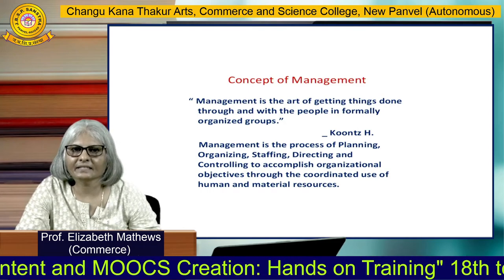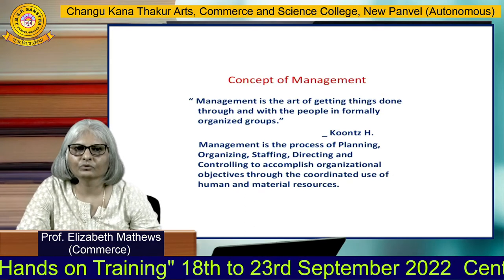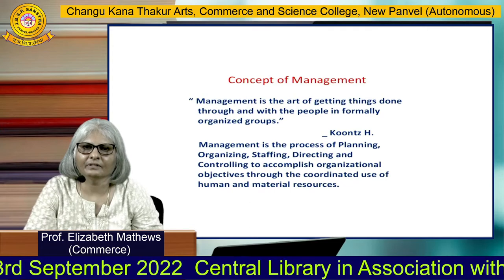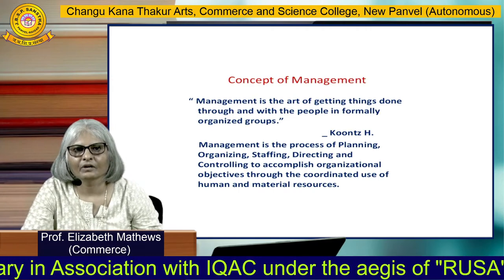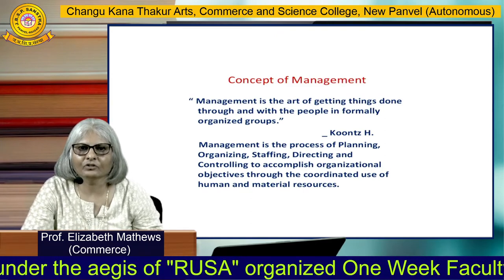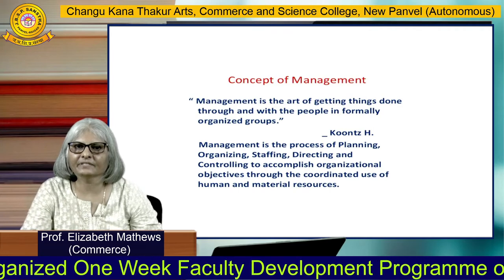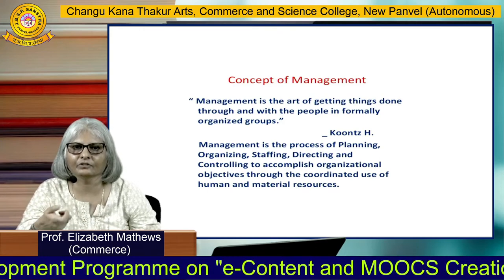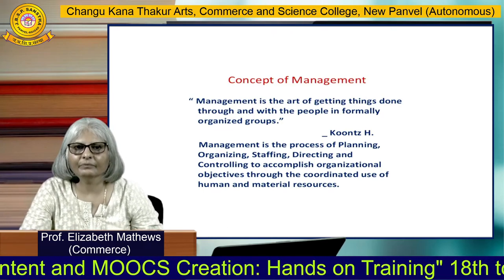Management is the process of planning, organizing, staffing, directing, and controlling to accomplish organizational objectives through the coordinated use of human and material resources. This is a lengthy but all-inclusive definition — it includes the functions of management. You have certain objectives set for the organization; how do you achieve them? It is through these functions of planning, organizing, staffing, directing, and controlling.